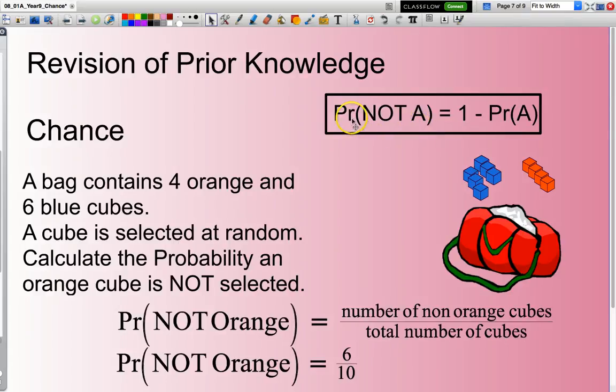So in other words, the probability of not selecting an orange cube will be equal to one minus the probability of selecting that. So in other words, it is one minus the probability of selecting an orange. So the probability of not selecting an orange cube will be equal to one minus, well, what was the answer on the previous slide? Four tenths. So one minus four tenths equals six tenths.